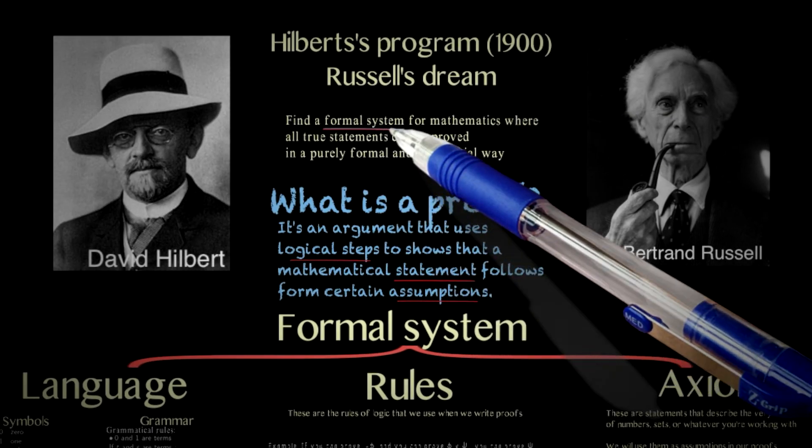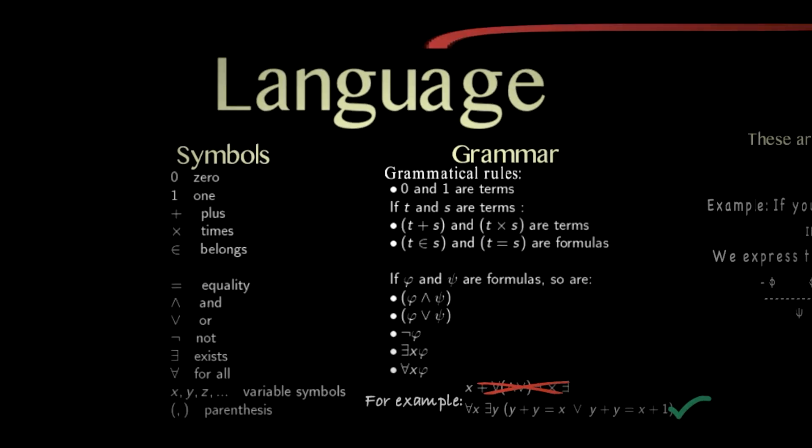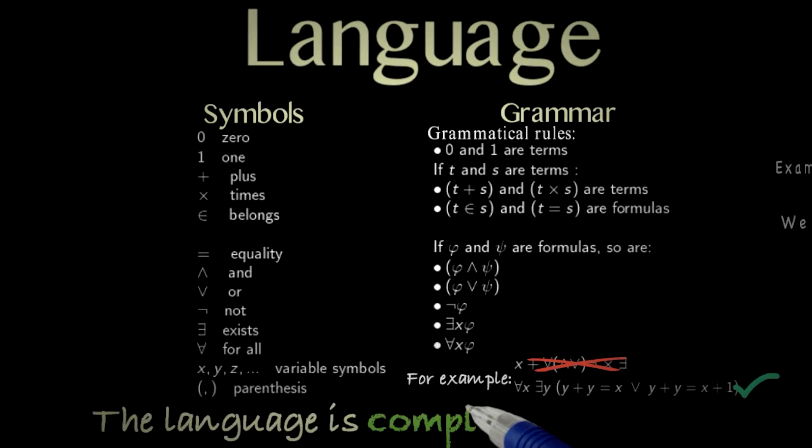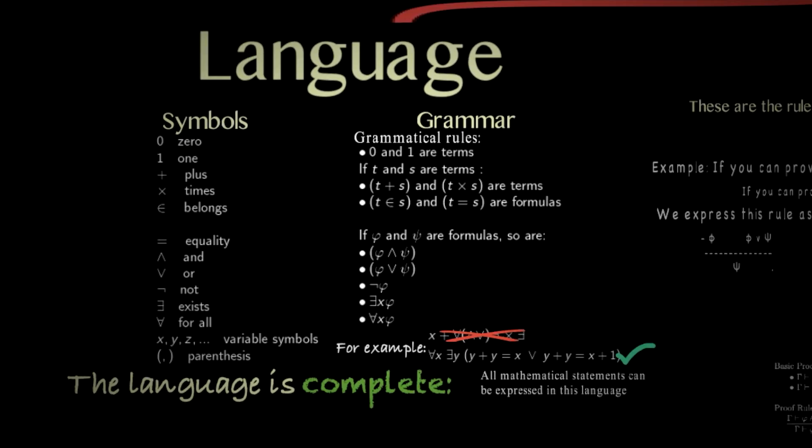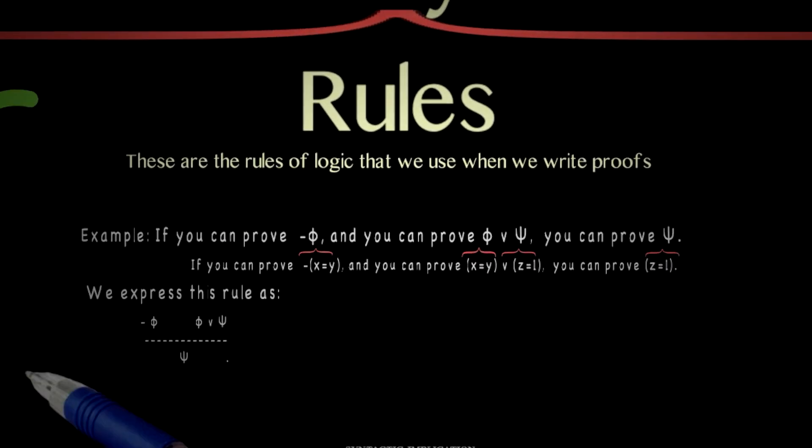So now we know what a formal system is. Here come the key points. The language is complete. So, all mathematical statements can be expressed in this language. Once you get used to working in this language, you're going to see that every mathematical statement you want to make, you can make it in this formal language using these grammatical rules. So, that's good.